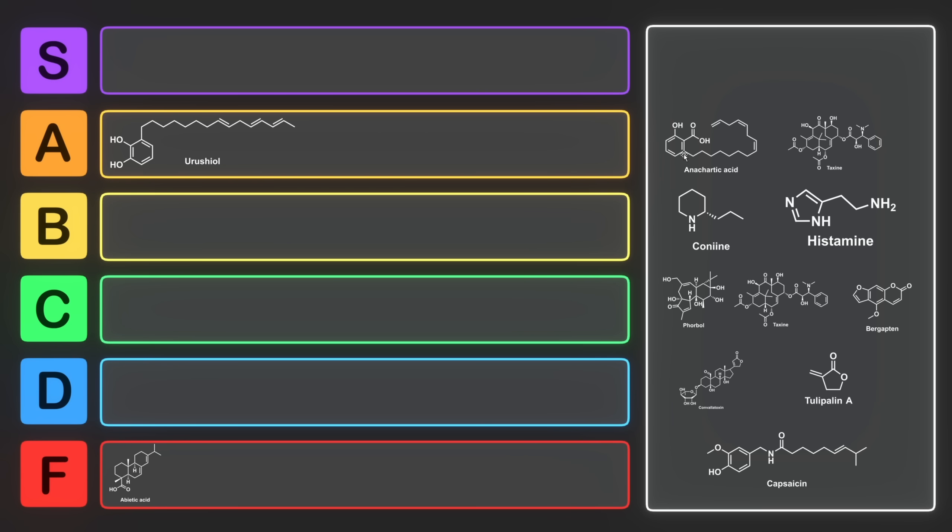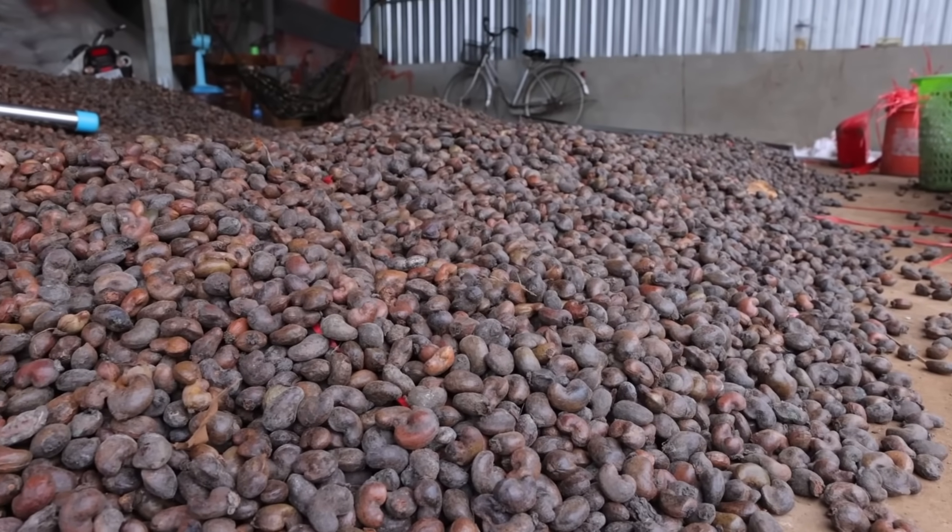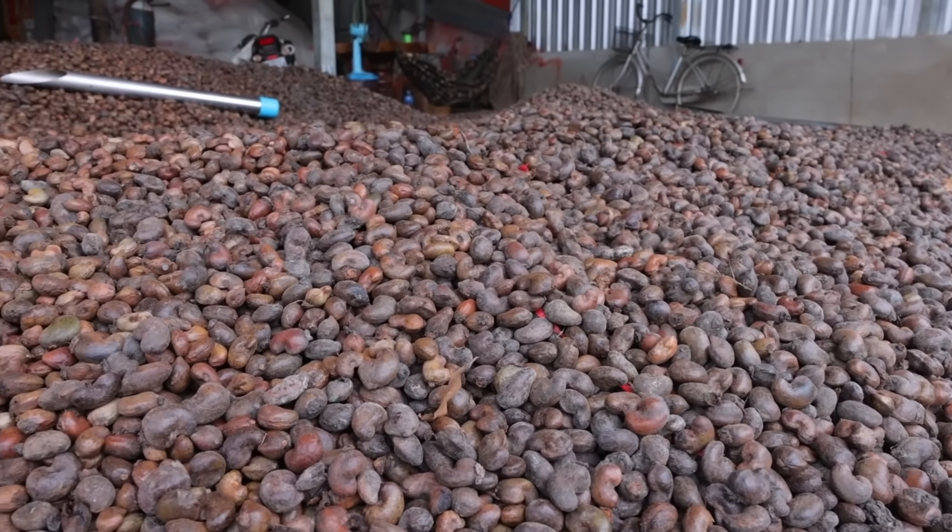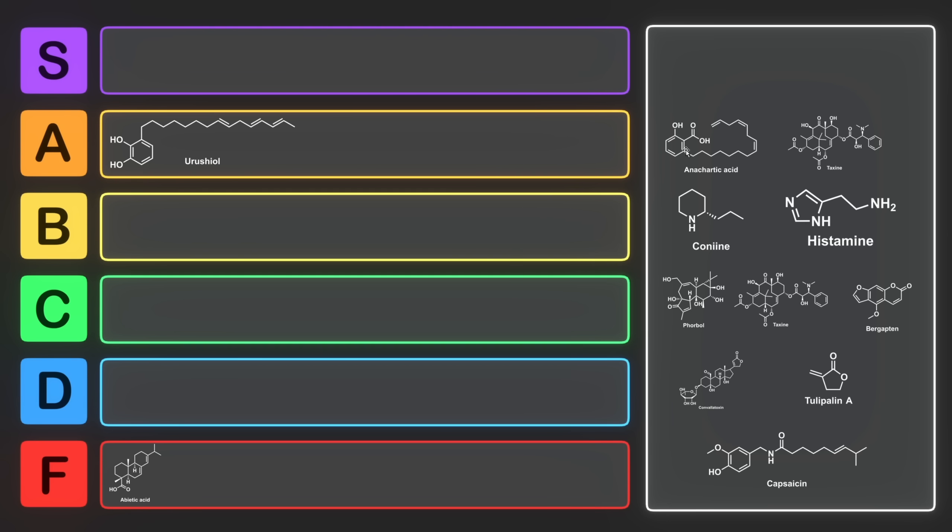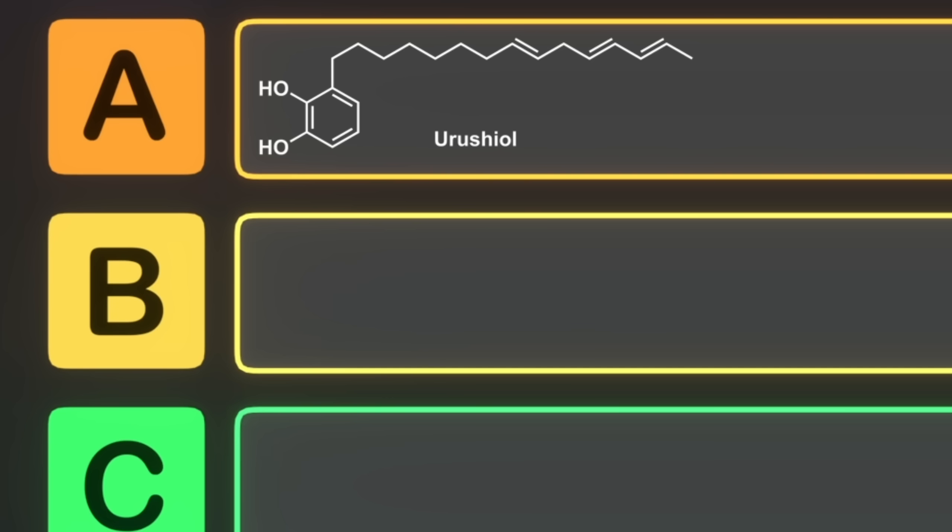Similarly, anacardic acids can trigger urushiol-induced contact dermatitis, though it's much less likely you'll be covered in cashew shells than just randomly brush up against a poison oak. Anacardic acids also have uses as a repellent for insects and small pests, and research is currently underway testing antibacterial effects. So you're not as likely to encounter this as urushiol, but it's almost as bad as urushiol is, and it can cause the same medical condition. So for that reason, I think we're going to have to put it into B tier. But it does start with an A, so why don't we put it into A tier?